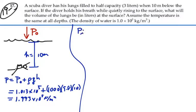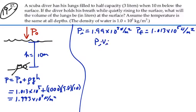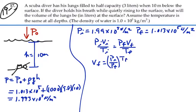So our initial pressure for the diver is 1.99 times 10 to the 5 newtons per meter squared. Our final pressure for the diver is 1.013 times 10 to the 5 newtons per meter squared. And we know in general that P initial V initial over T initial is going to equal P final V final over T final. And we want to solve this for V final, the volume at the surface.